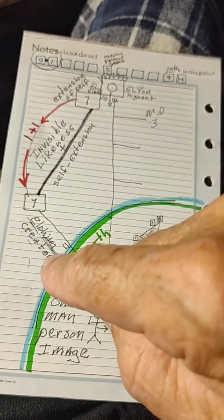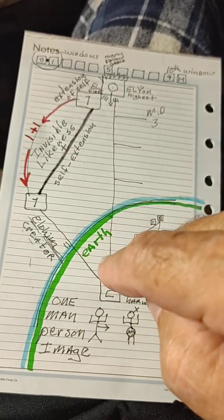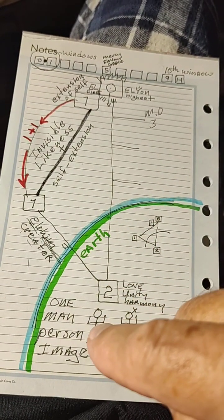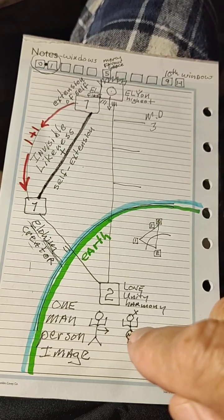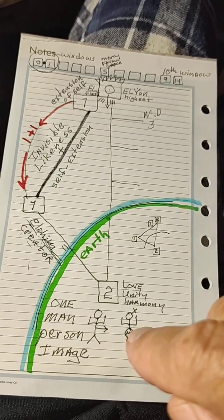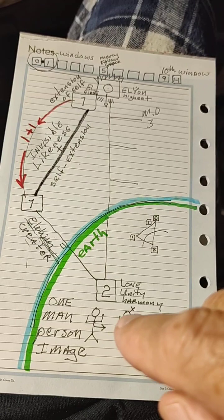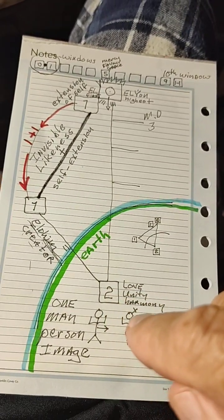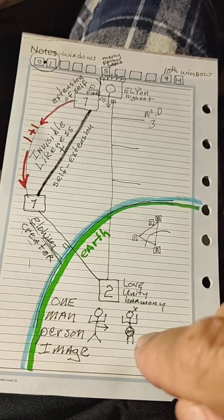Then in creation, creator Elohim, one plus a female one is two in unity and love and harmony in the family.